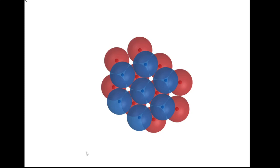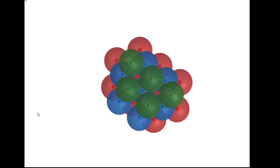Now if we have to put the third layer on top of the second layer, we will have two options. In the first option, we are going to use these points and build the third layer in such a way that it is different from the first two layers. This way we have generated a lattice.